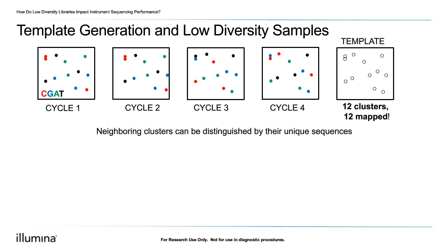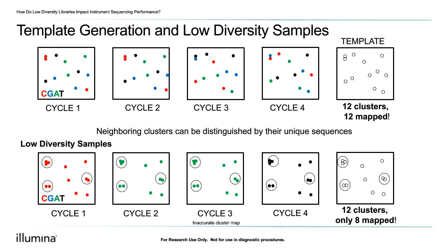In each cycle, the signal from the clusters is recorded and used to generate the template map that reflects the physical location of each cluster on the flow cell. Once this template map has been generated, it's used throughout the sequencing run. Because template generation uses the unique series of base calls during the first few cycles, it is most efficient with high diversity libraries. For a low diversity library, clusters that are closely adjacent will show the same sequence and the instrument may map these groups as a single cluster, reducing the raw number of clusters mapped.